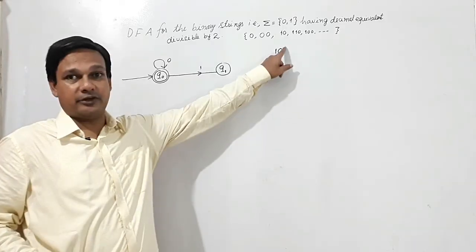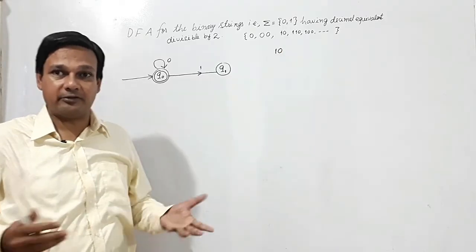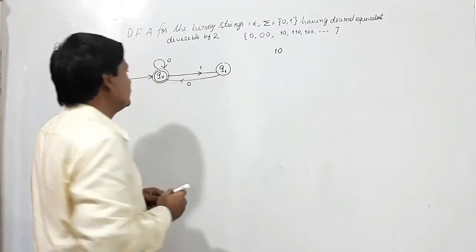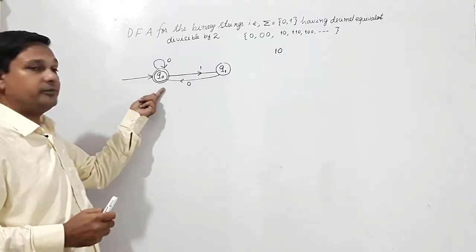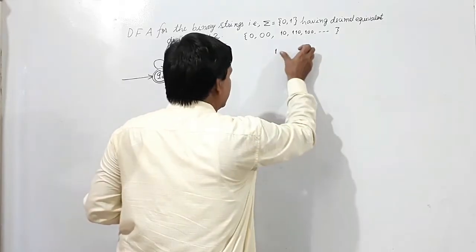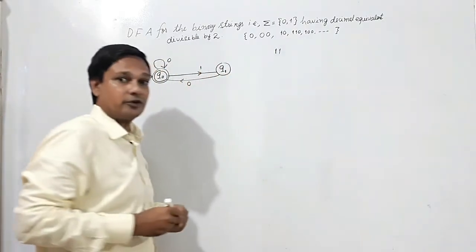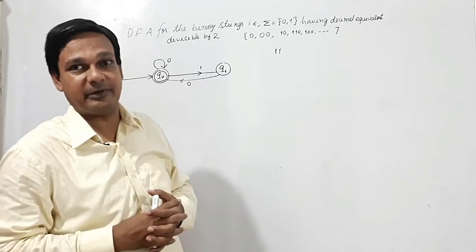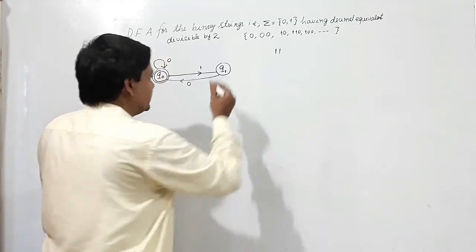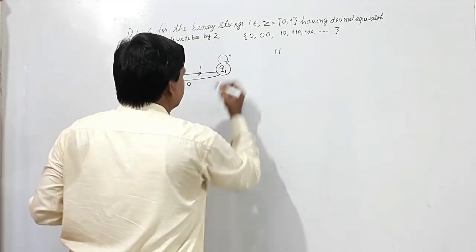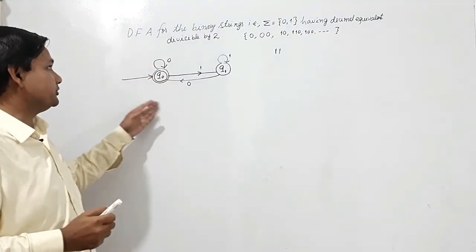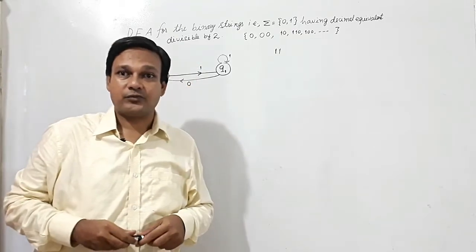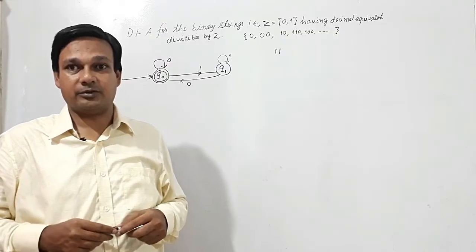Now at Q1 with input 0: the string '10' has decimal equivalent 2. Dividing 2 by 2, the remainder is 0, so the transition goes to Q0. At Q1 with input 1: the string '11' has decimal equivalent 3. Dividing 3 by 2, remainder is 1, so the transition stays at Q1. This completes the DFA for binary strings whose decimal equivalent is divisible by 2.